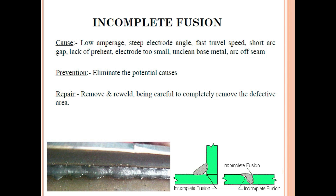Incomplete fusion occurs when the weld metal does not properly fuse with the base metal. Causes include low amperage, steep electrode angle, fast travel speed, short arc gap, lack of preheat, electrode too small, or uncleaned base metal. Low amperage means there is not enough heat to melt the base metal. Prevention: eliminate the potential causes and maintain proper amperage as per the WPS. Repair: remove and re-weld, being careful to completely remove the defective area before rewelding.